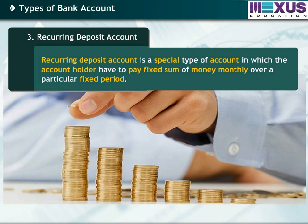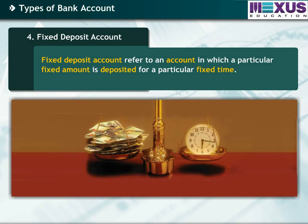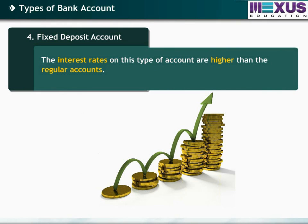Recurring deposit account is a special type of account in which the account holder has to pay a fixed sum of money monthly over a particular fixed period. Interest is given quarterly to the account holder. Fixed deposit account refers to an account in which a particular fixed amount is deposited for a particular fixed time. The interest rates on this type of account are higher than regular accounts.